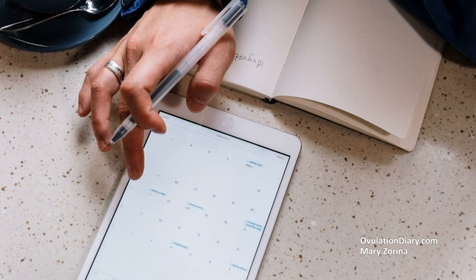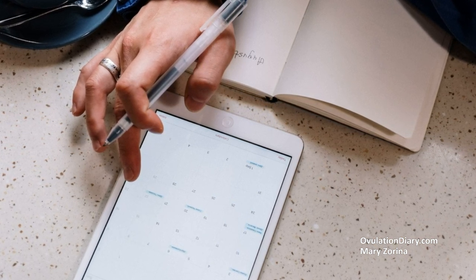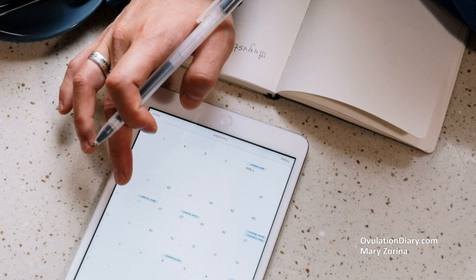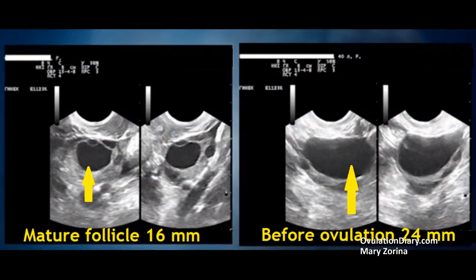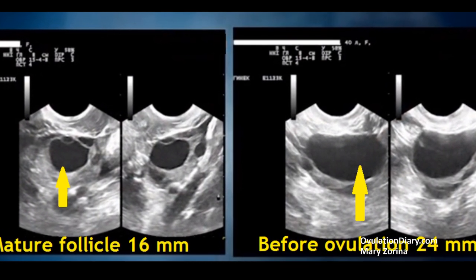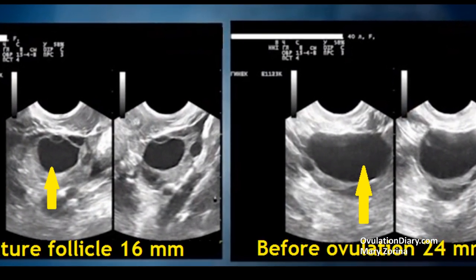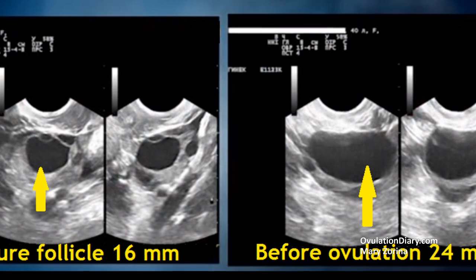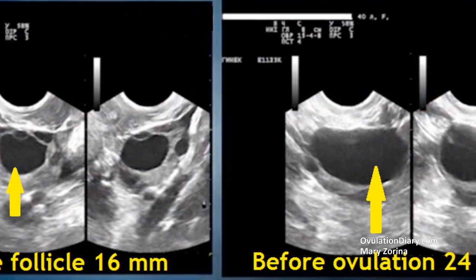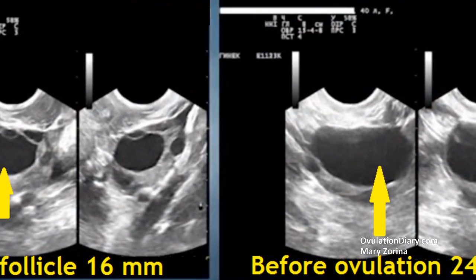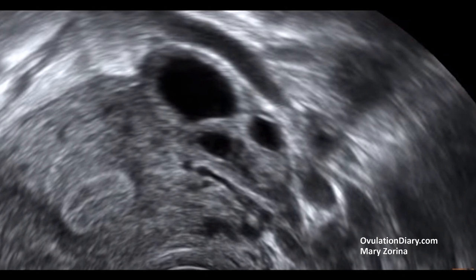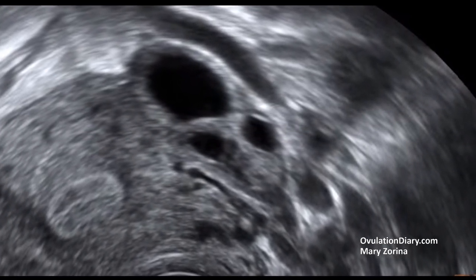How to determine the egg's release date using folliculometry: during the first two or three visits, the ultrasonographer will determine how fast the dominant follicle is growing. It will rupture when it reaches approximately 18–24mm. If at the last scan the follicle reached 18mm and the average growth speed was 2mm per day, then most likely ovulation will occur within the next three days and you can start actively planning. When you know a mature egg is coming soon, pay attention to your well-being and try a few more methods. By tracking such patterns, you can calculate your ovulation day without expensive ultrasounds or tests.